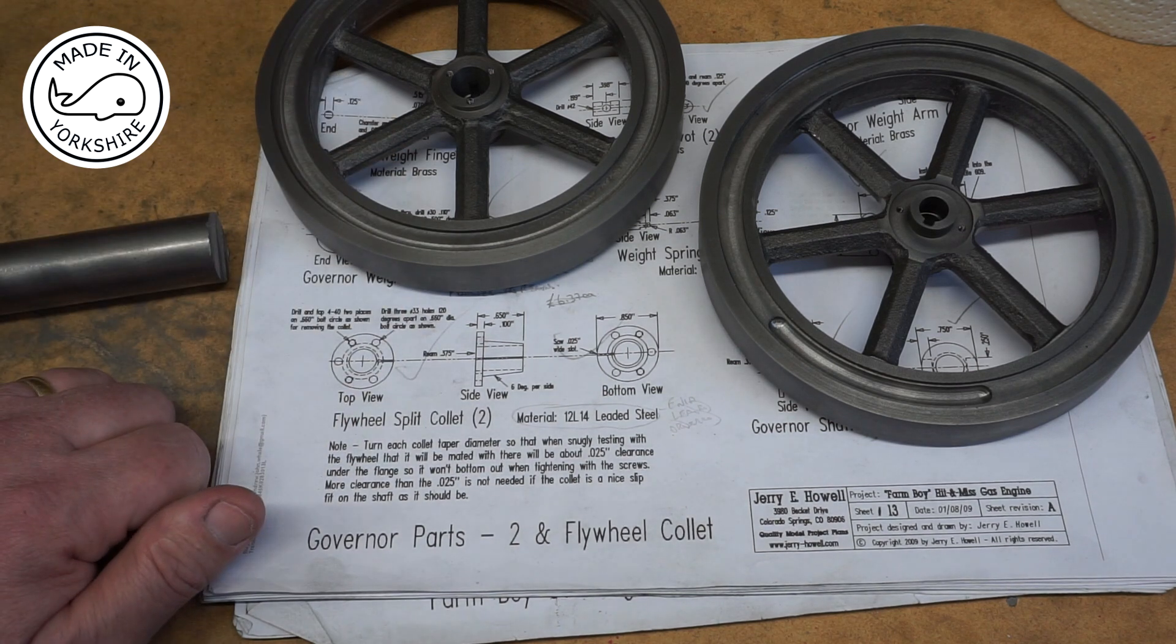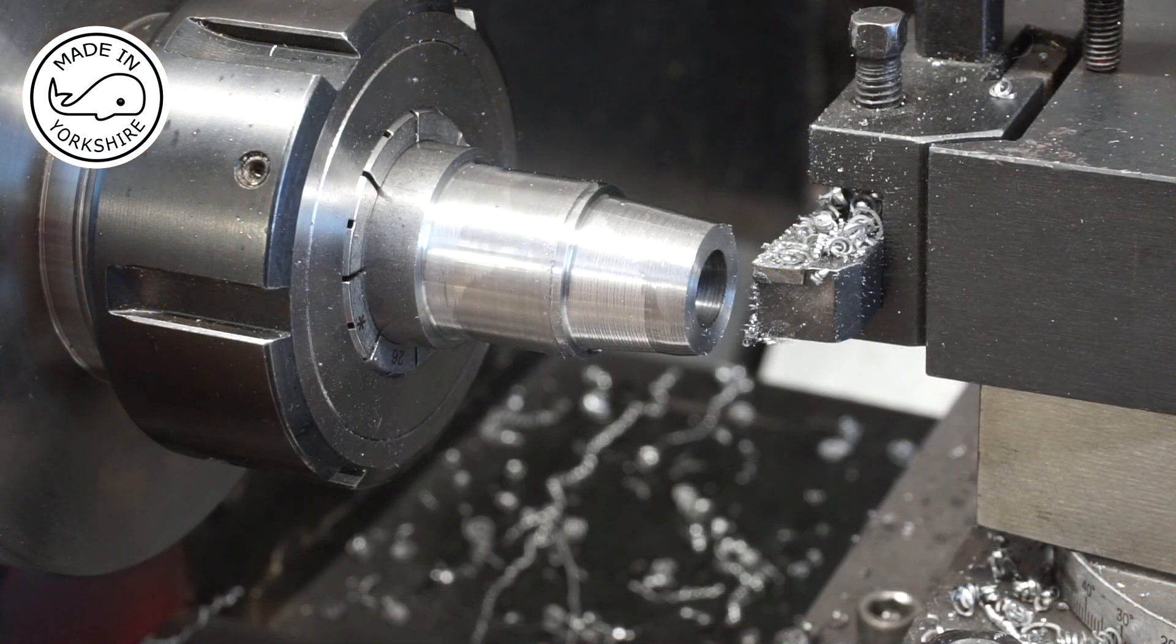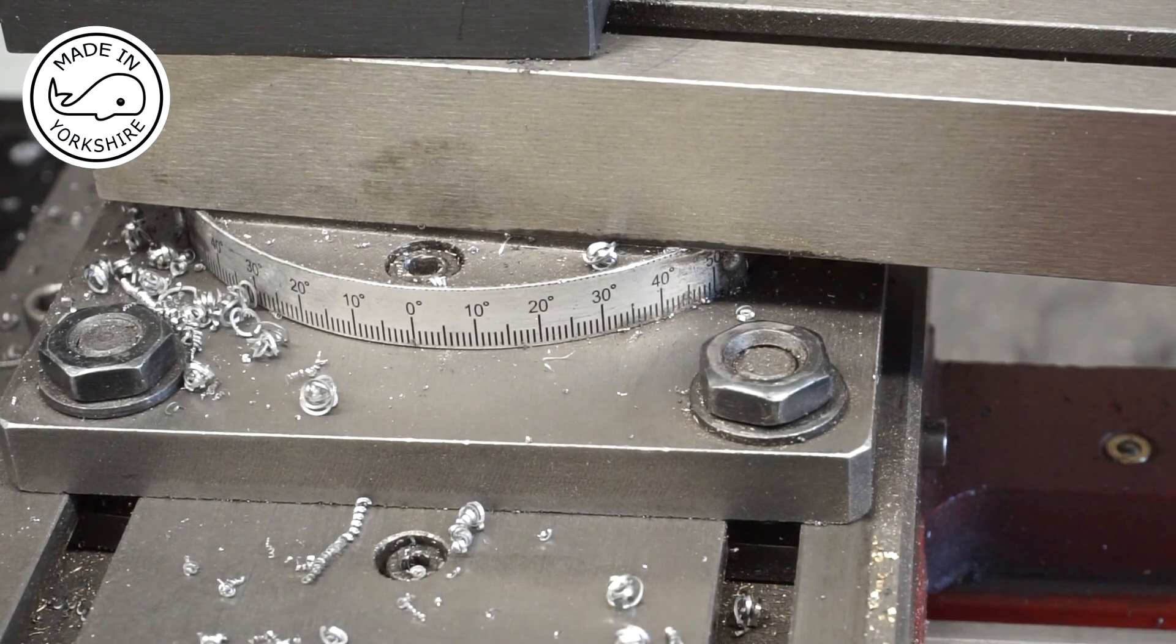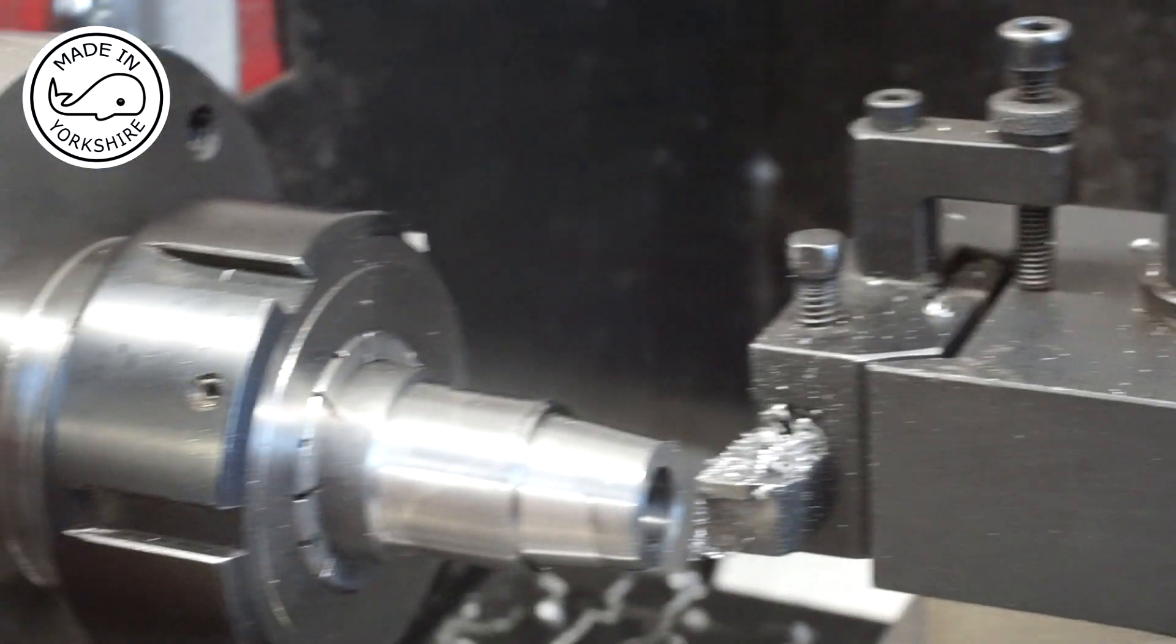So here I'm machining one of the flywheel collets and I've got the lathe in reverse and I managed to retain the angle of my compound slide for when I did the flywheels, so hopefully these will be a perfect match.